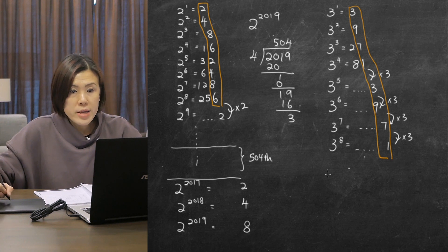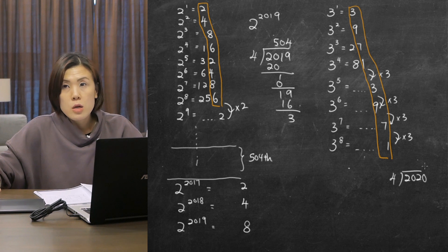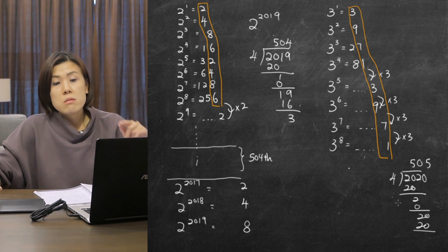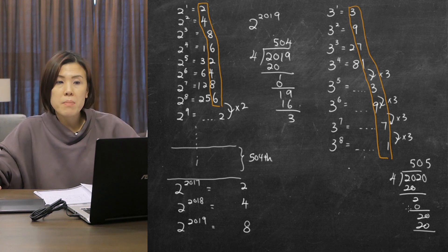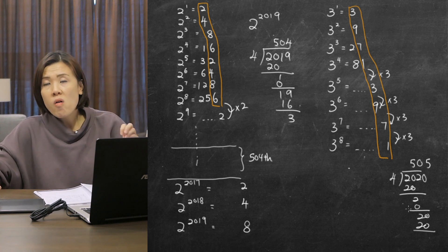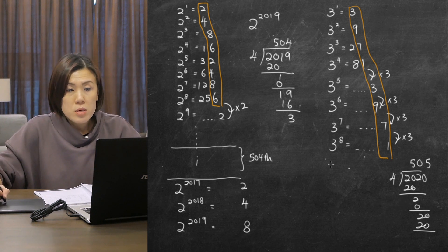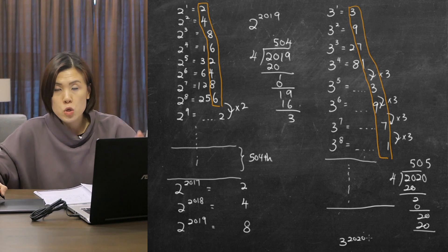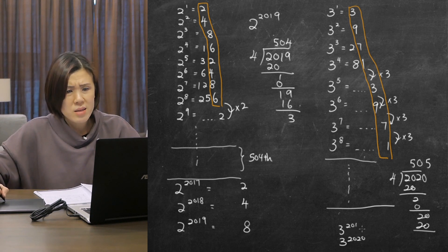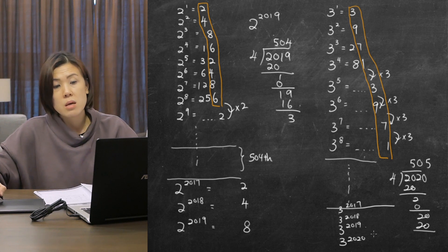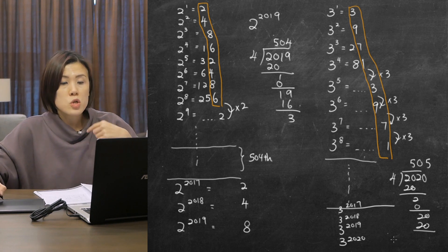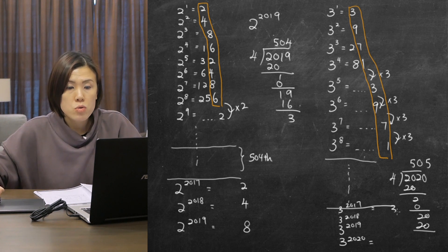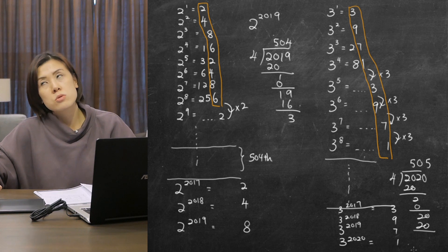To find the ones digit of 3 to the power of 2020, I divide 2020 by 4. 2020 divided by 4 is exactly 505 with no remainder. This means 3^2020 is the last number in the 505th group, corresponding to the 4th position in the repeating pattern 3, 9, 7, 1. The 4th position is 1, so 3 to the power of 2020 is a very large number that ends with 1.